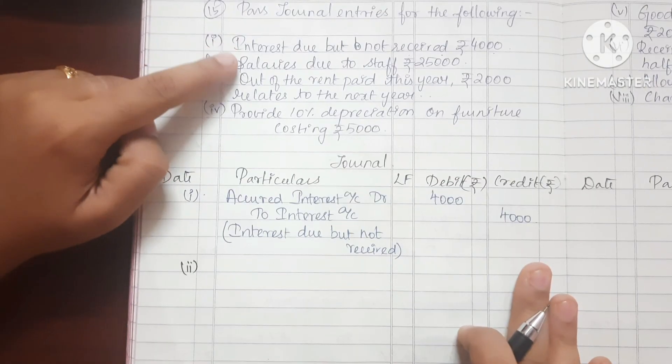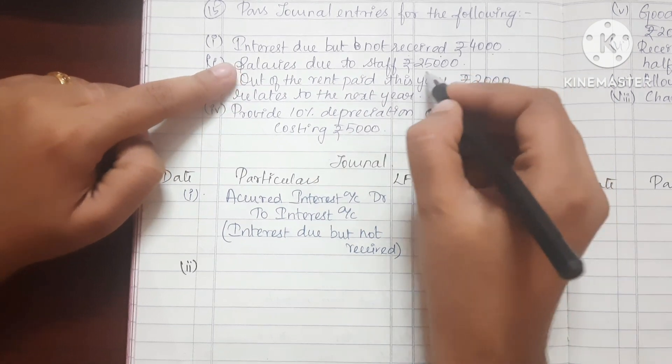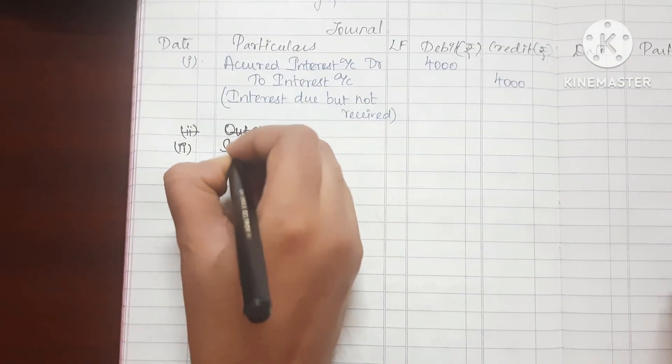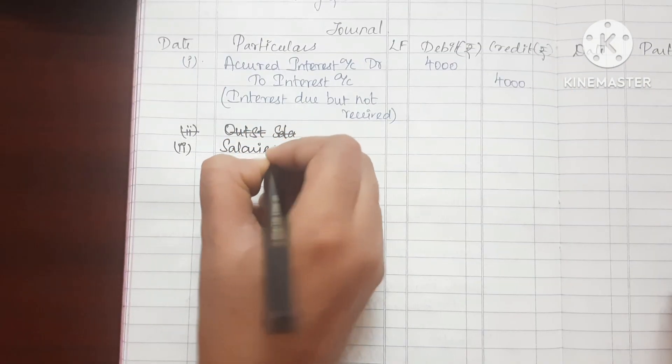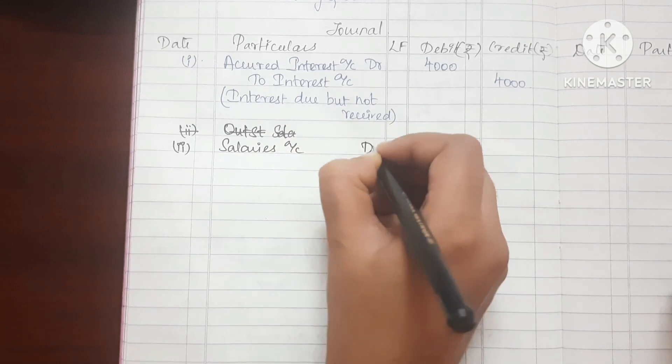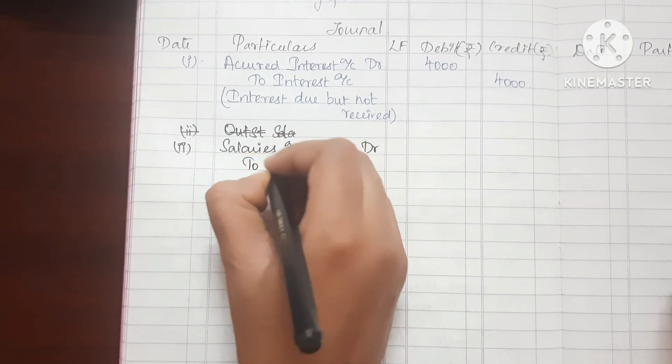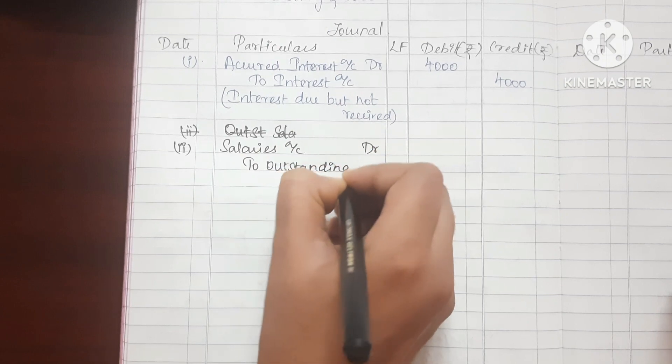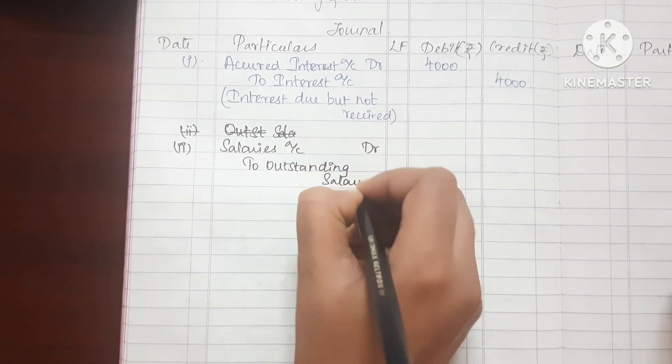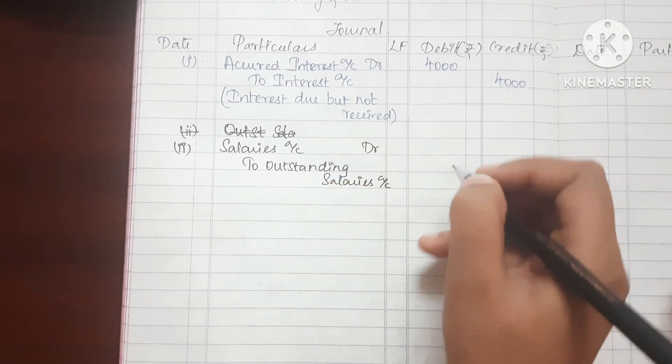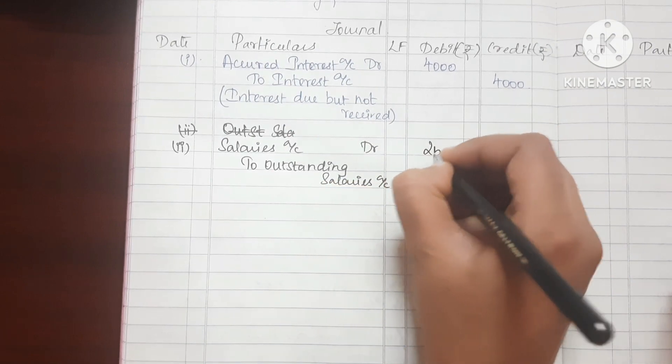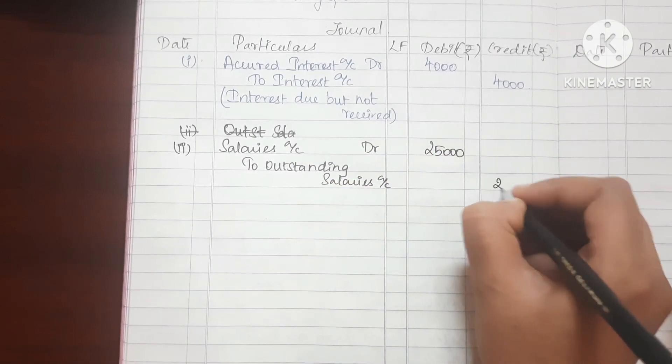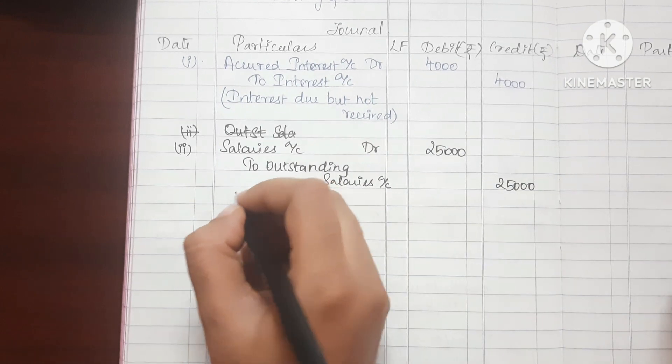Second sub-division: Salary due to staff Rs.25,000. Salary account expenses, Salary account debit to Outstanding Salary Account. Amount 25,000. Narration.